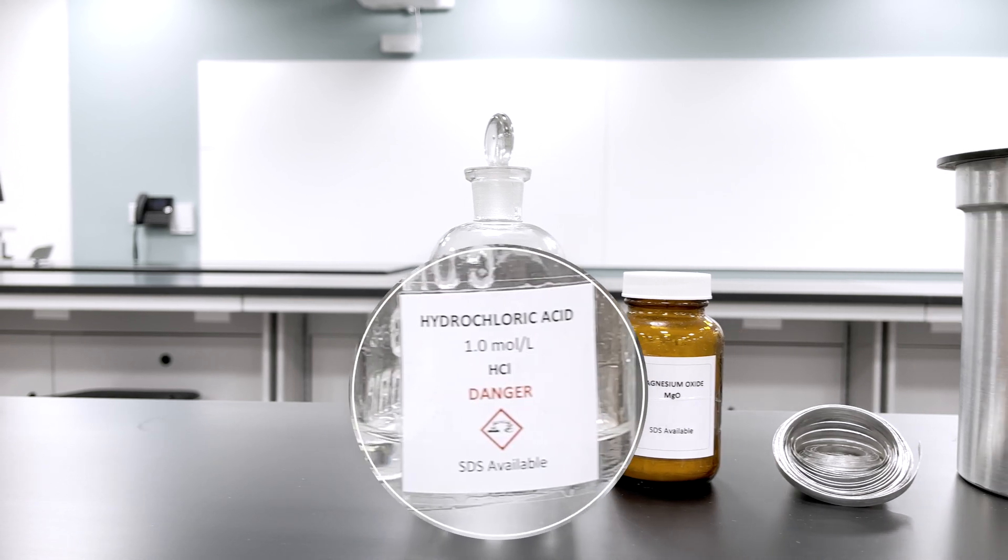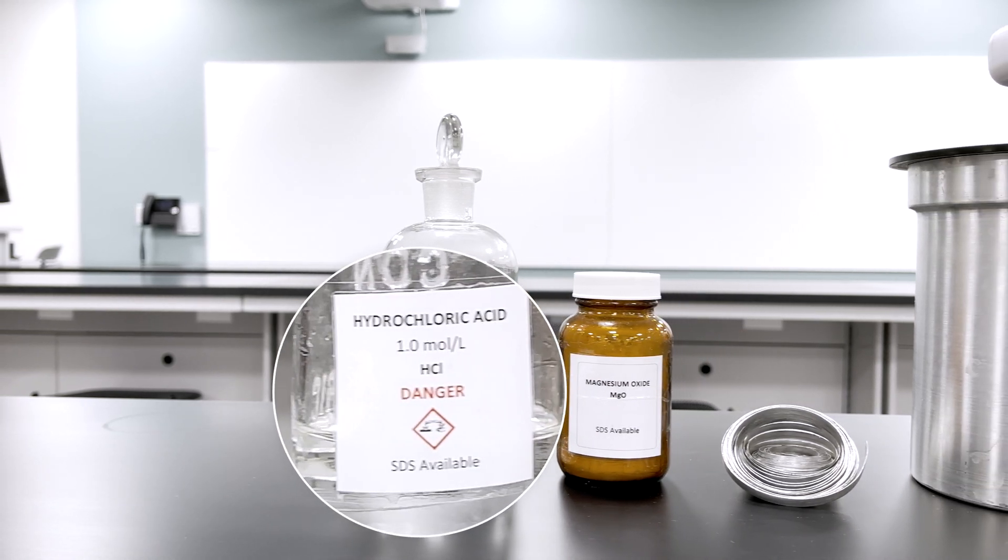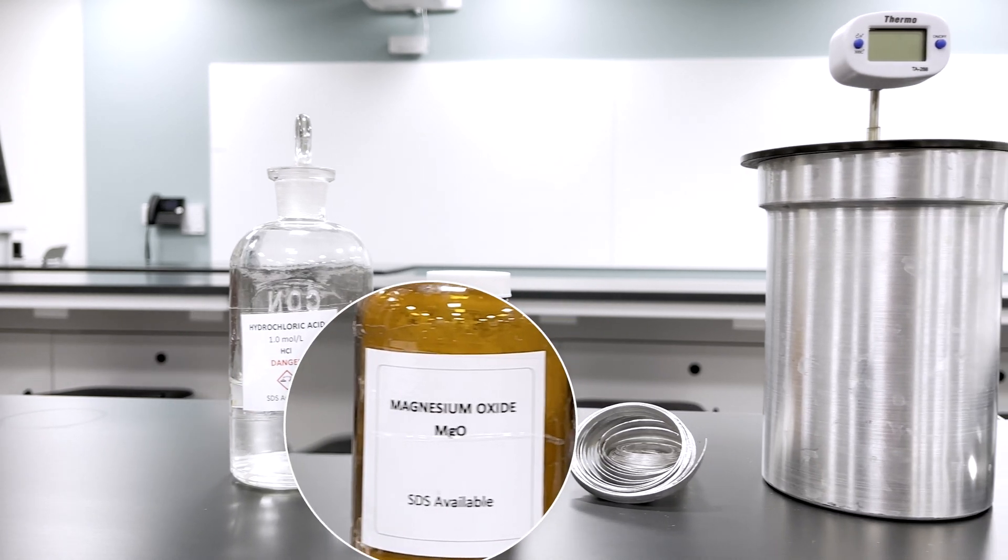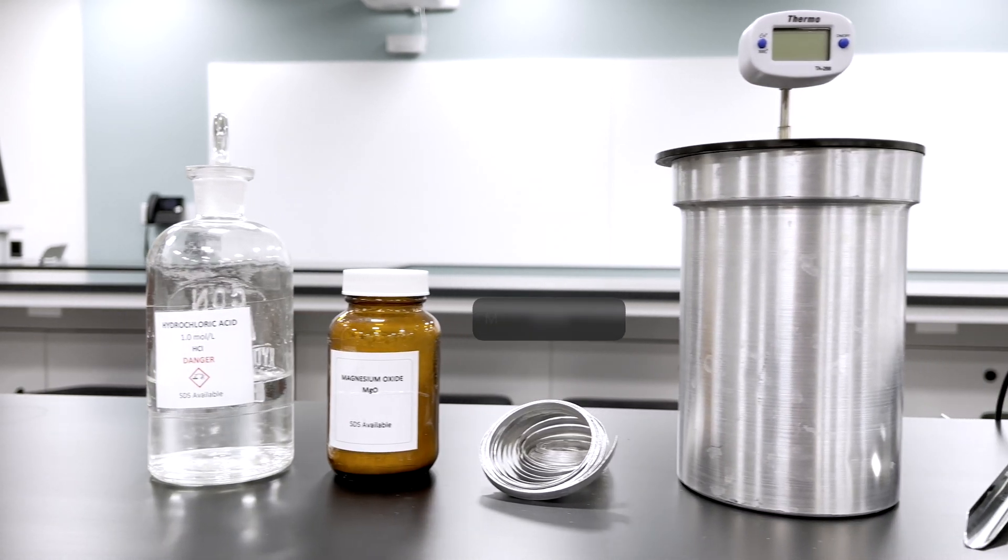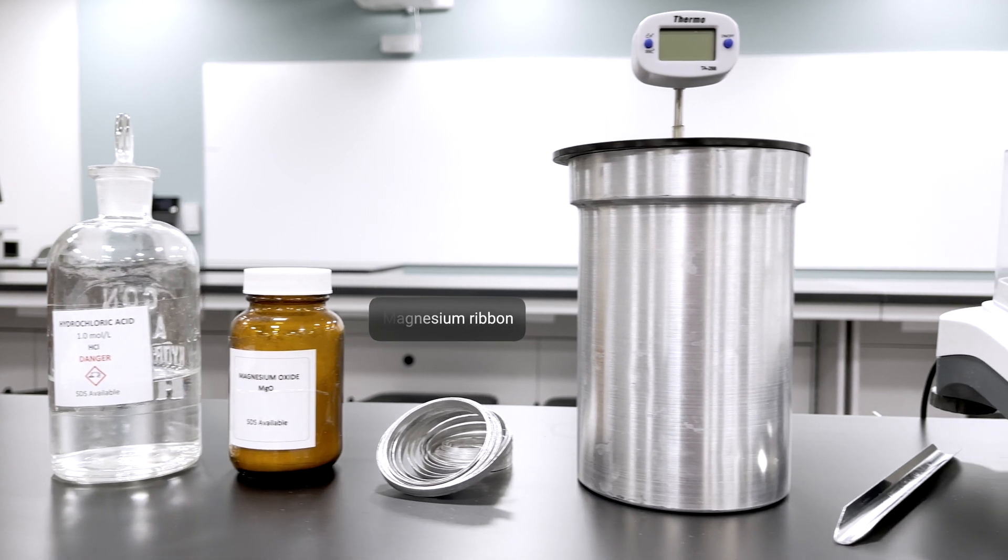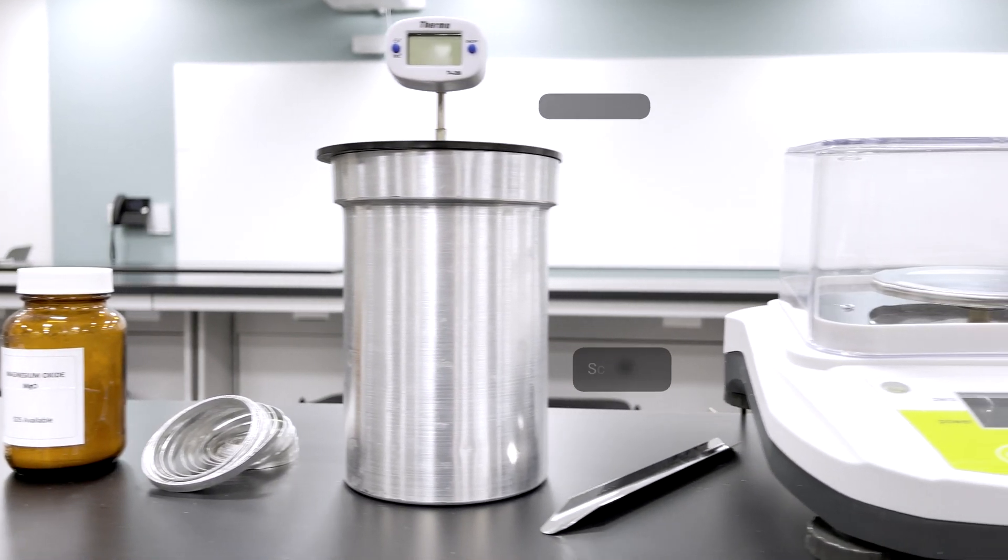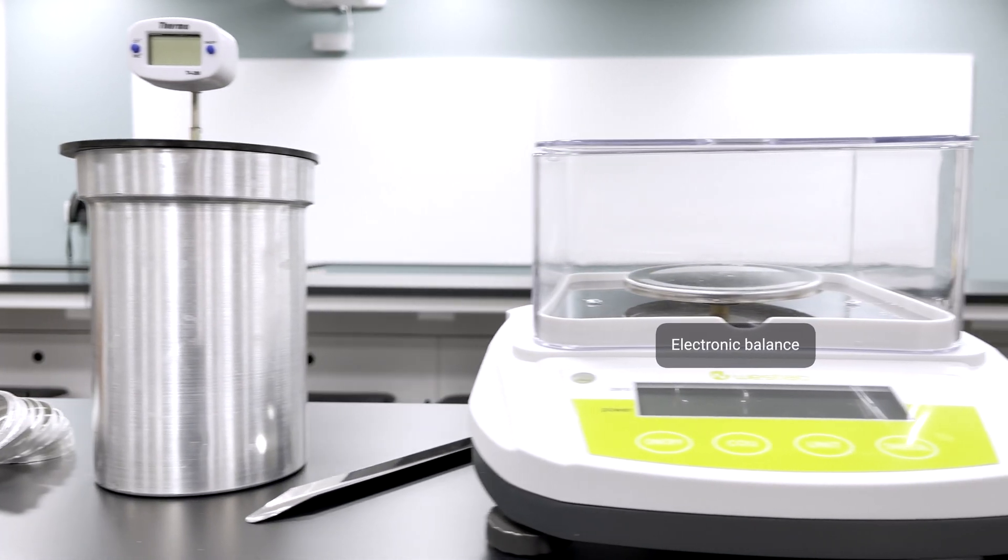The materials we shall use are: a 1 molar solution of aqueous hydrogen chloride, magnesium oxide powder, magnesium ribbon, a simple calorimeter with a thermometer, a spatula, an electronic balance, sandpaper, and a 100 milliliter graduated cylinder.